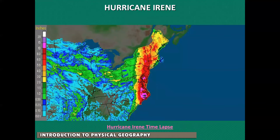Or Hurricane Irene in 2011 in the northeast, and how much rain it gave to Orange County and southern New York, New England, and New Jersey all the way down to North Carolina. These are natural events that have consequences to the people who live there, their property, insurance rates — all that stuff is connected.